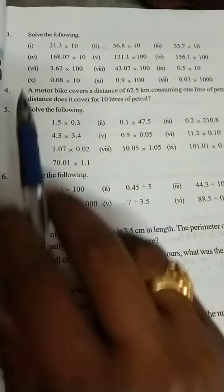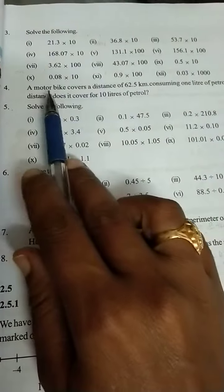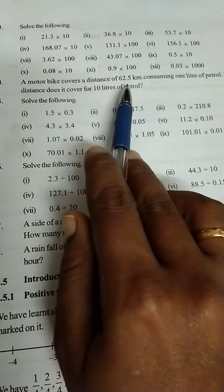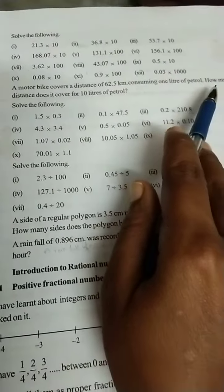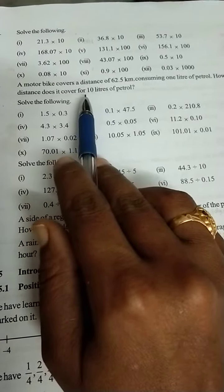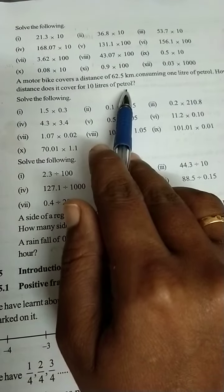Dear viewers, next, fourth question. A motorbike covers a distance of 62.5 km consuming 1 litre of petrol. How much distance does it cover for 10 litres of petrol?